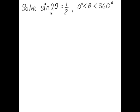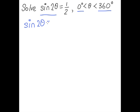Today we're going to solve this trigonometric equation: sine of 2θ equals one half, for θ between 0 degrees and 360 degrees. Let's write down the equation — sine of 2θ equals one half — and solve for 2θ by taking the inverse sine of both sides.